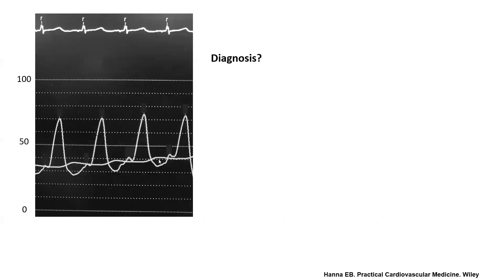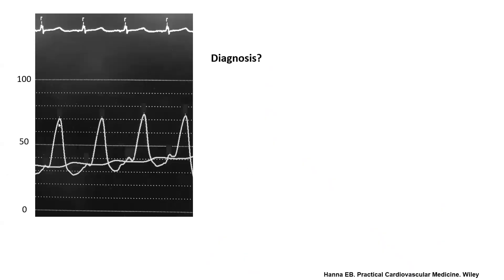A different topic — identify the diagnosis on this tracing. The answer is mitral regurgitation. First, determine what this tracing is: could it be PA pressure, RV pressure, wedge, or LA pressure? Even though the peak reaches 70 mmHg — which might tempt one to call it RV or PA pressure — always first look at the interval between the peaks.